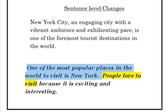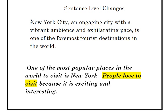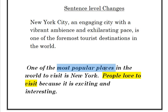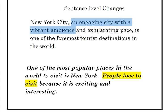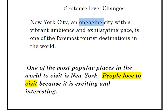So this takes the place of the original. New York is very popular — "foremost tourist destination" means it is one of the most popular places in the world to visit. "To visit" takes the place of "tourist destination." "People love to visit because it is exciting and interesting" takes the place of "exhilarating and engaging" — engaging basically means interesting, and exhilarating means exciting. Simply changing words and grammatical structure gives you a paraphrase.